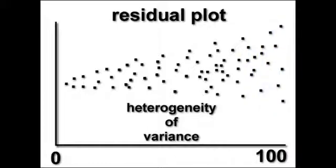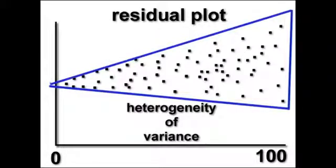If you can see any kind of shape with your residuals, such as a triangle or a curve or any other kind of recognizable trend, then you have a problem.